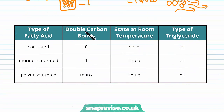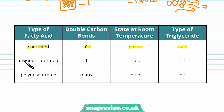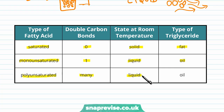To summarise: a saturated fatty acid in a triglyceride has no carbon-carbon double bonds, is solid at room temperature, and we call this type a fat. A monounsaturated fatty acid has one double carbon bond, exists as a liquid at room temperature, and these triglycerides are called oils. Polyunsaturated fatty acids have many double bonds, are also liquid at room temperature, and are also called oils.